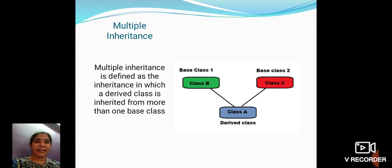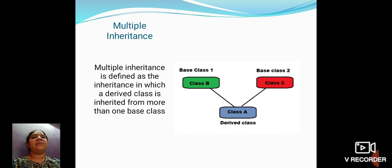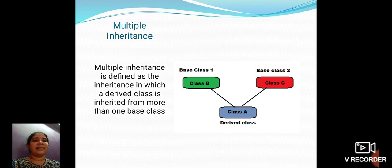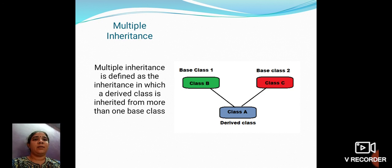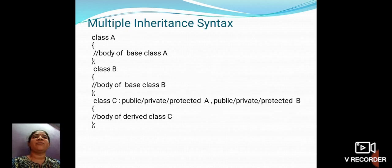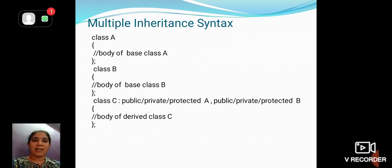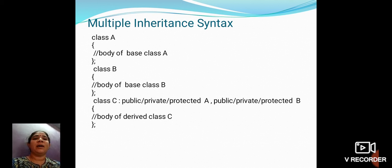Multiple inheritance is defined as an inheritance in which a derived class is inherited from more than one base class. Here, class C is the derived class which has been inherited from two base classes, namely class A and class B. In the general syntax, class C is inherited from both class A and class B, with the base classes separated by a comma.